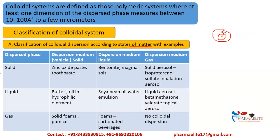When the dispersed phase is solid and the dispersion medium is also solid, examples are zinc oxide paste and toothpaste. When dispersed phase is solid and dispersion medium is liquid, examples are bentonite and magma salts. When dispersed phase is solid and dispersion medium is gas, an example is isoproterenol sulfate inhalation aerosol — a solid aerosol.